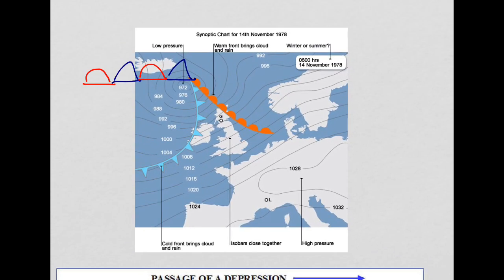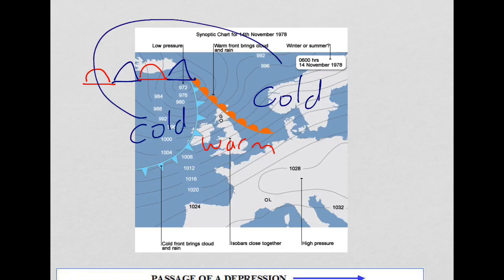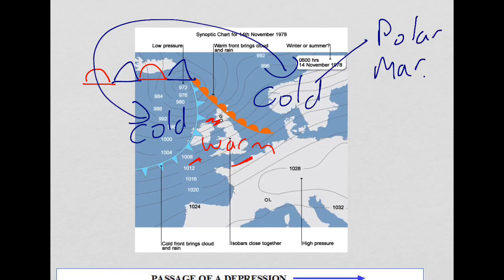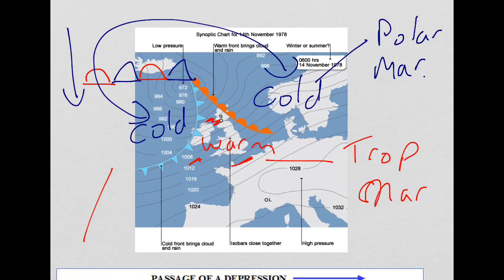So that's cold in the outer sector, warm in the middle warm sector, and then cold again behind the cold front. This cold body of air typically comes from the polar maritime air mass, coming down from the north-west of the UK. The warm body of air typically comes from the tropical maritime air mass, coming up from the south-west. The two of them mix and interact to give us our depression, which forms to the west of the UK and then moves easterly.